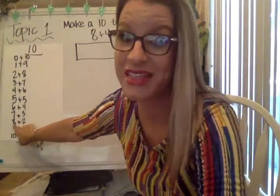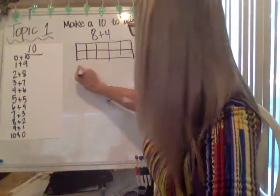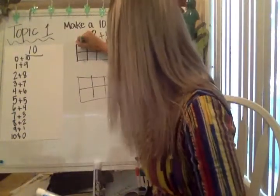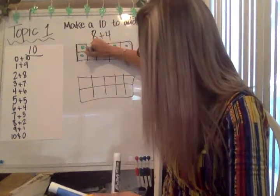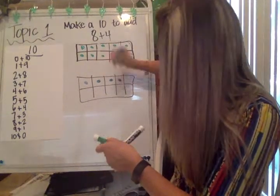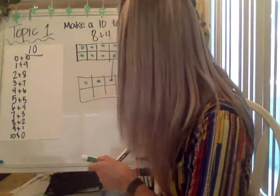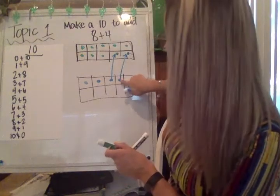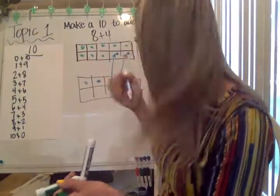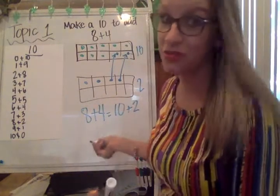In your head, you're thinking: eight needs two more to get to the next 10. So I know I'm going to have to move two from one of my 10 frames into the other 10 frame. So eight plus four — we've got eight dots filling in that top row first, and then we've got the four. In order to fill this in, we know we have to move two. So those two are gone — this 10 frame is full. Eight plus four also equals 12. Eight plus four is the same as 10 plus two, and both of those are equal to 12.